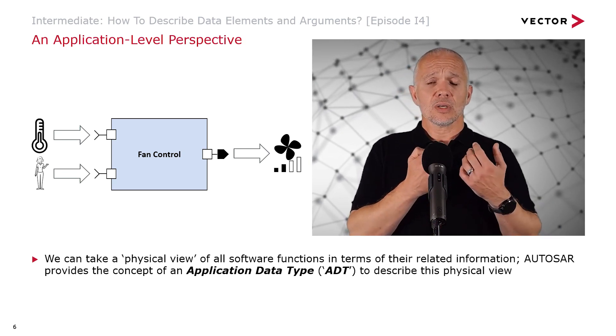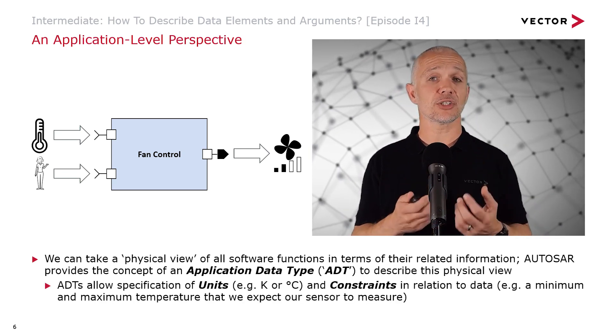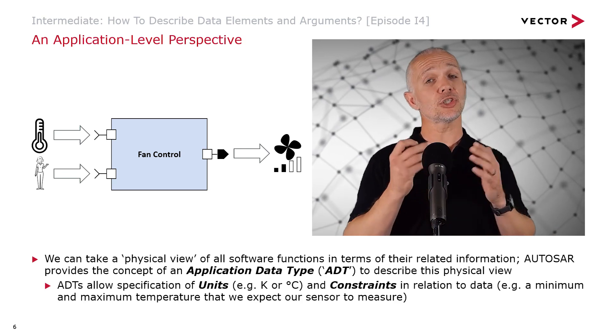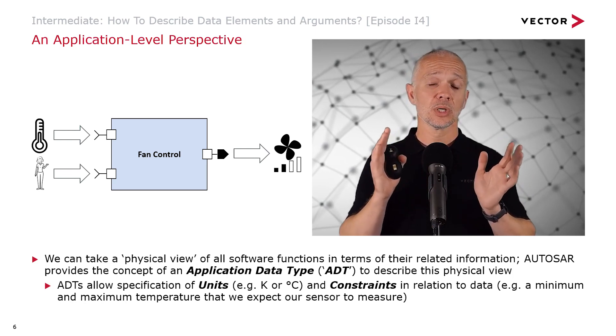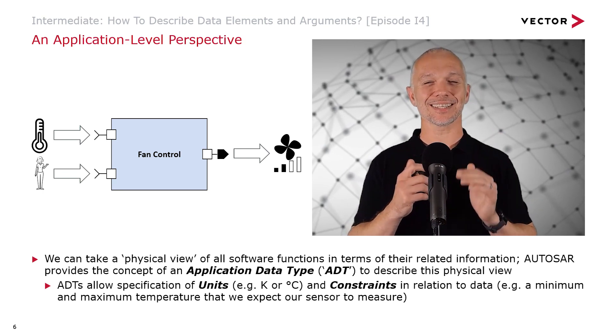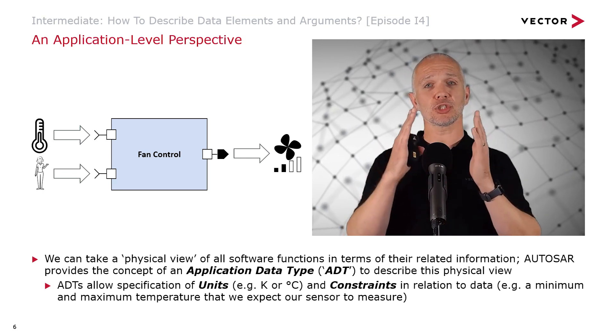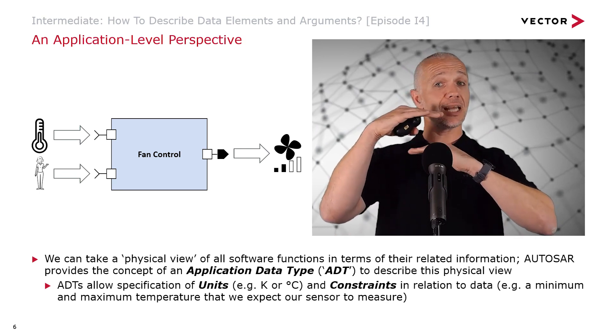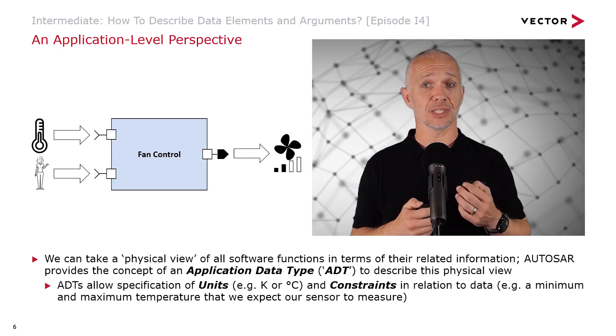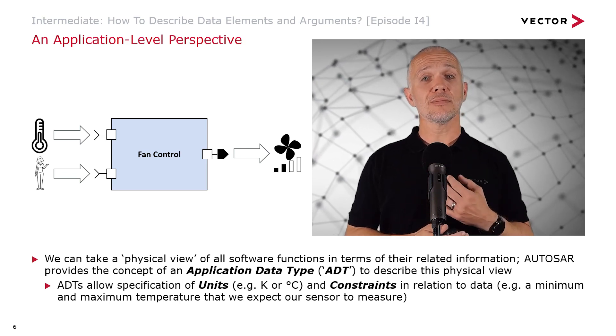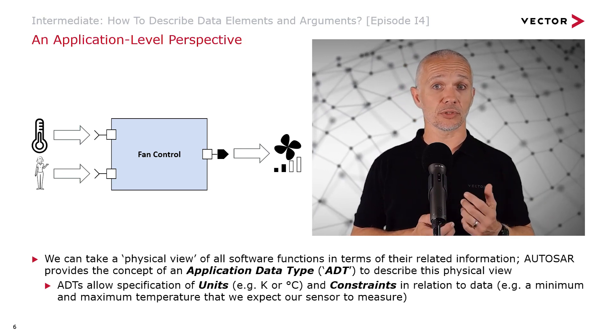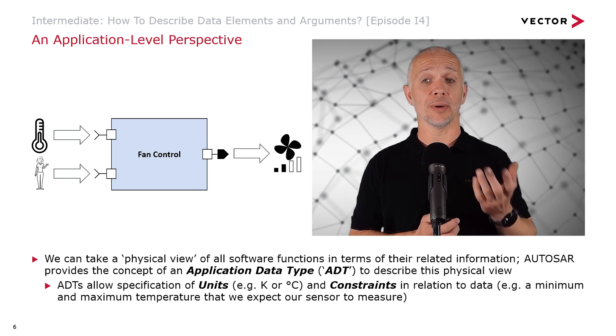Application data types allow the specification of units such as degrees Kelvin or degrees centigrade and constraints in relation to the data. For example, we might have a minimum and maximum temperature that we expect our sensor to be able to measure. Similarly, we might constrain within limits the value that we allow the user to set because of performance capabilities of our system. And we may only have a certain range of control of the speed of the fan.